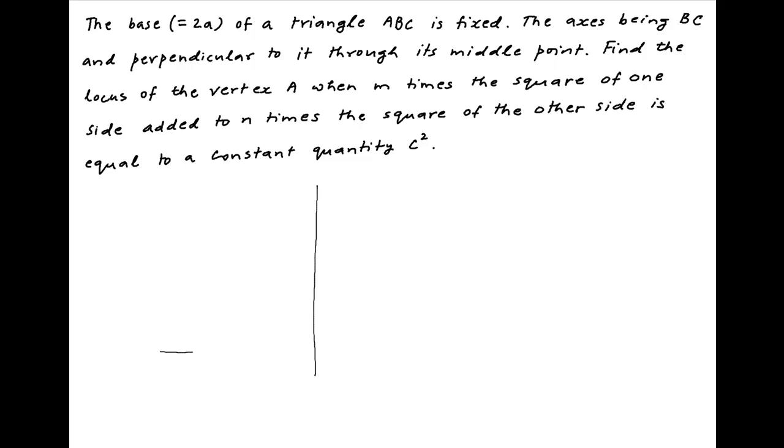Let's start by plotting triangle ABC on the Cartesian plane. The base BC of the triangle lies on the x-axis and the midpoint of BC is the origin through which the y-axis passes perpendicular to the x-axis. We are given that distance BC is equal to 2a. Therefore, the coordinates of point C are (a, 0) and the coordinates of point B are (-a, 0).